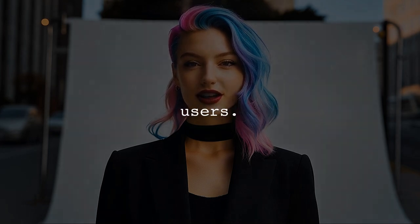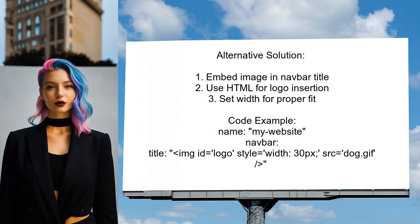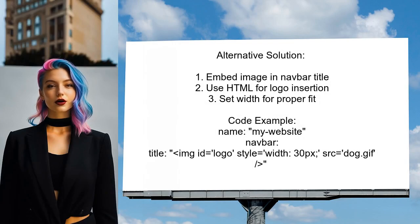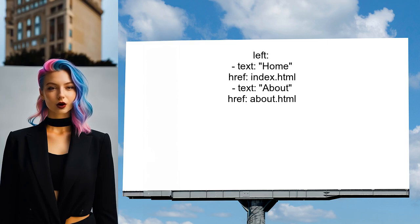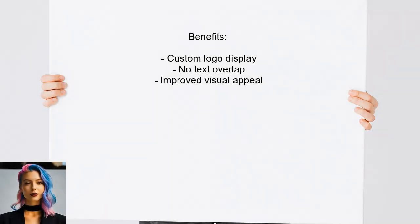An alternative solution shared by another user involves directly embedding an image in the navbar title. They suggest using HTML to insert the logo, specifying its width to ensure it fits properly. This method allows for a custom logo to be displayed alongside the navbar text without overlap, enhancing the visual appeal of your R Markdown site.